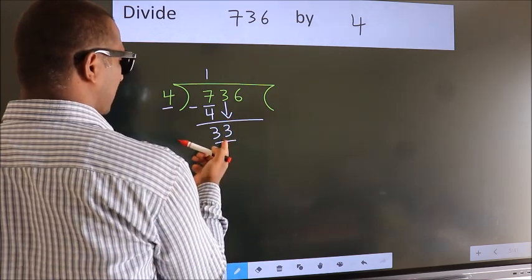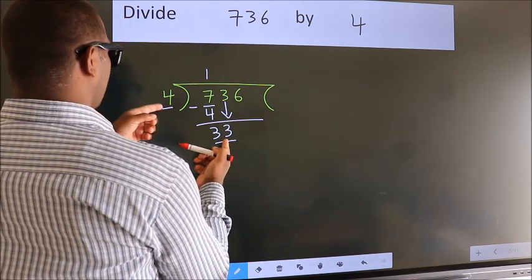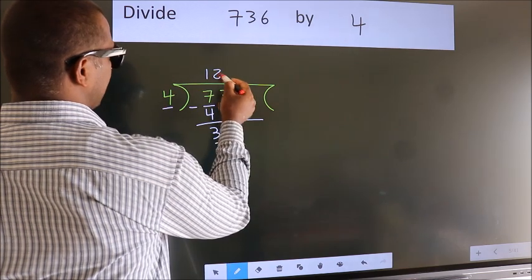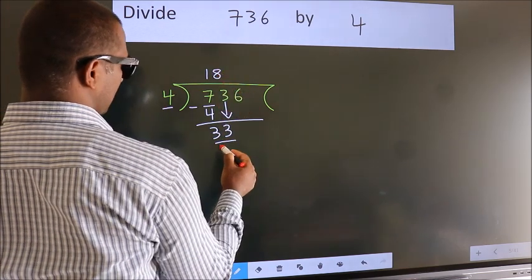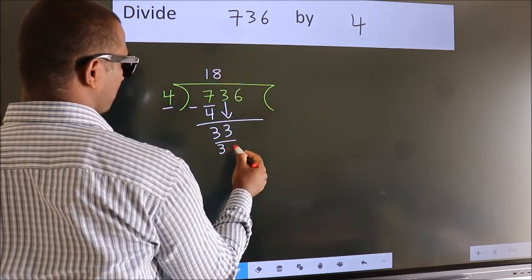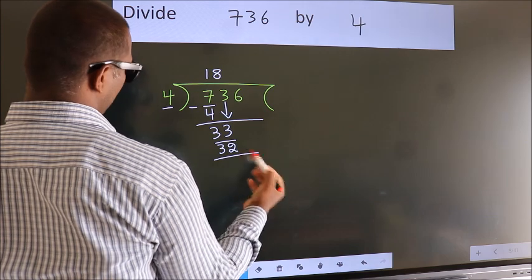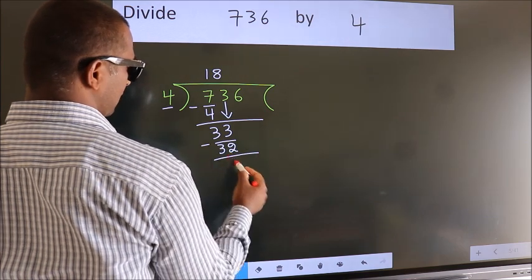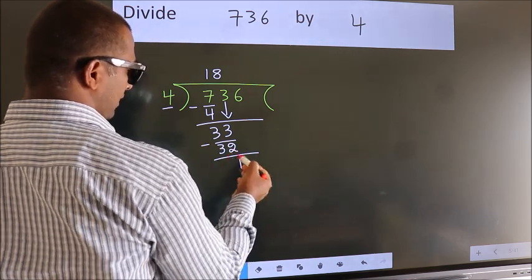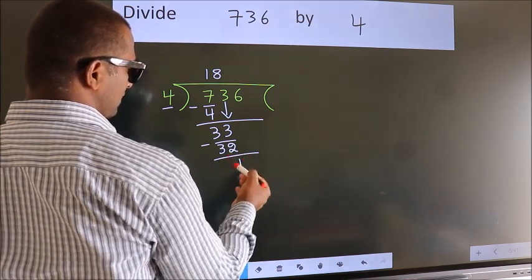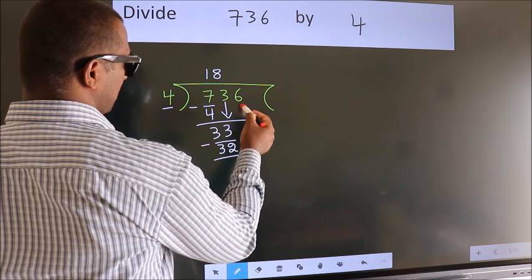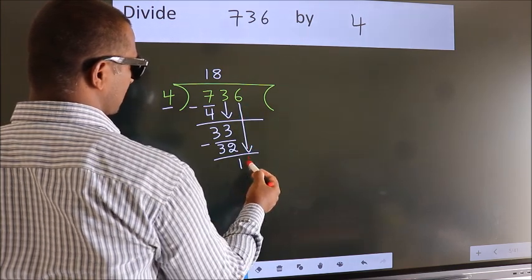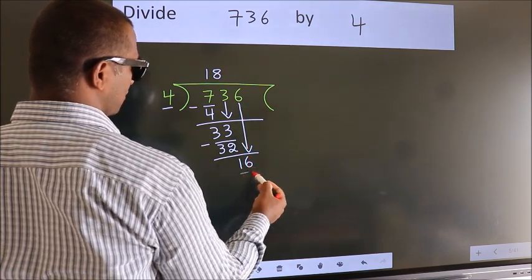A number close to 33 in the 4 times table is 4 eights, which is 32. Now we subtract — we get 1. After this, bring down the beside number. So 6 comes down, giving us 16.